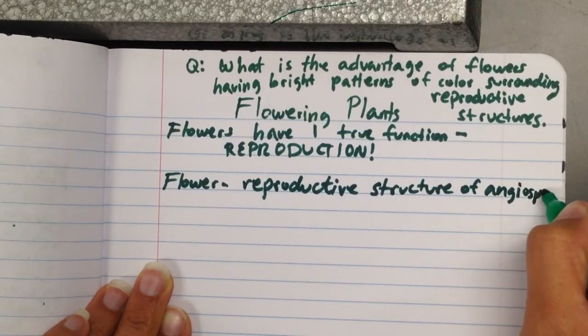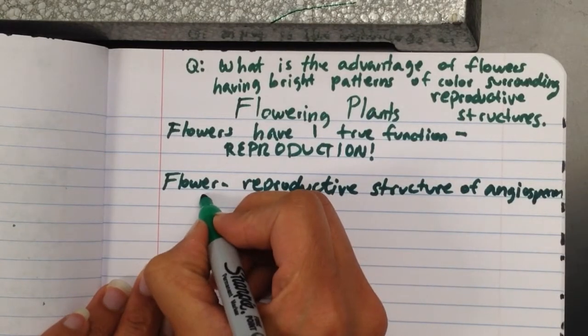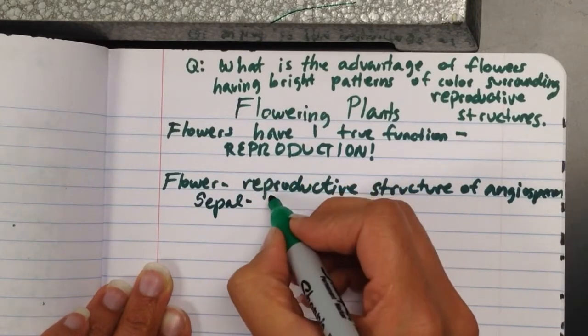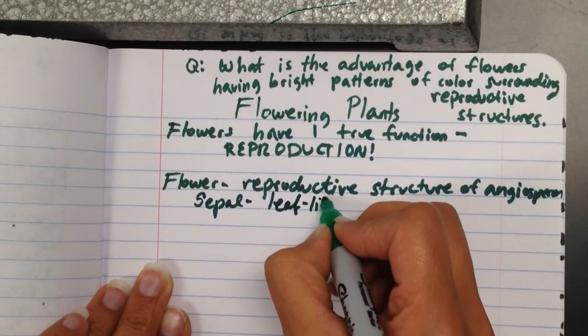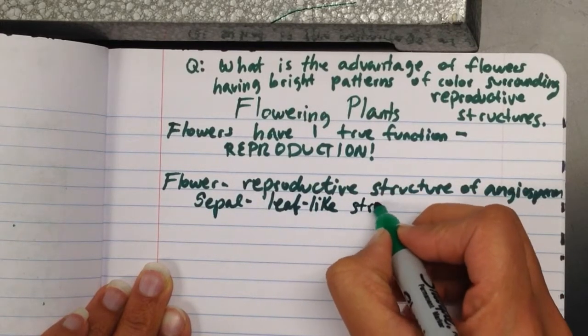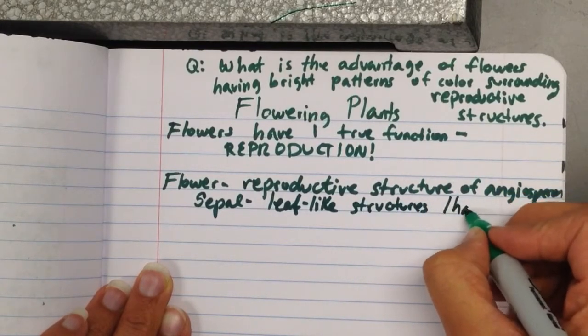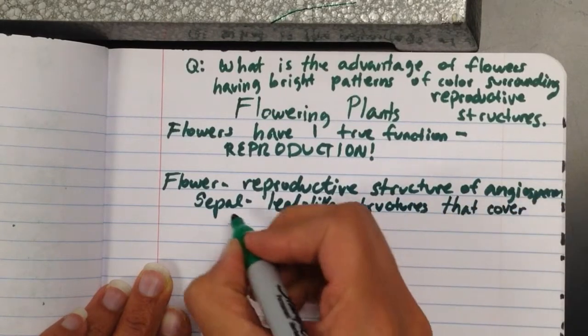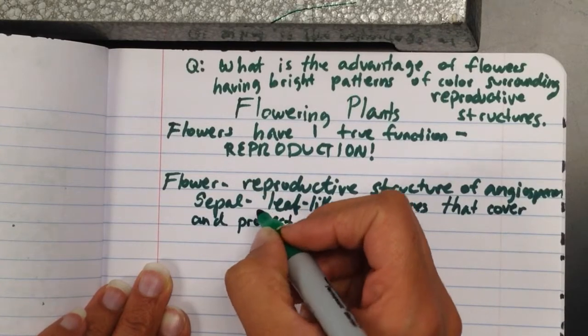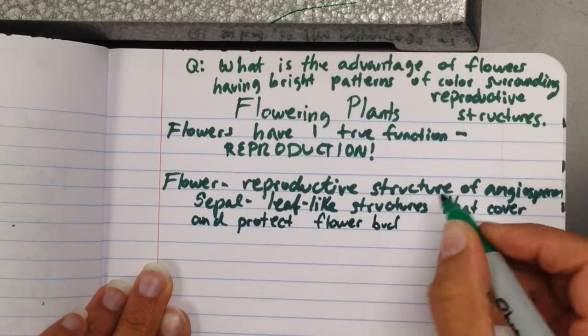And there are several parts to the flower that you need to know. So the first is the sepal, which is the leaf-like structures that cover and protect the flower bud before it opens.